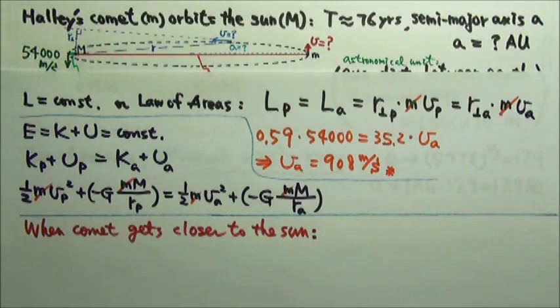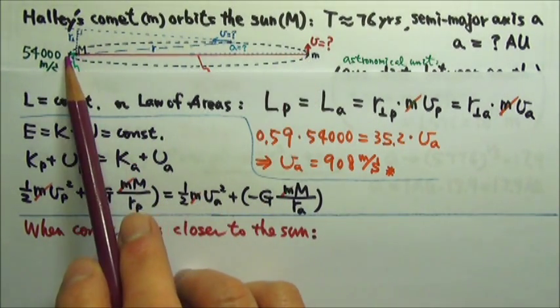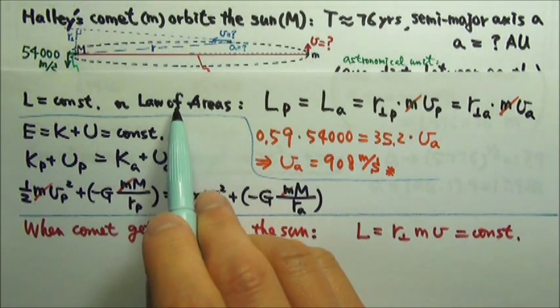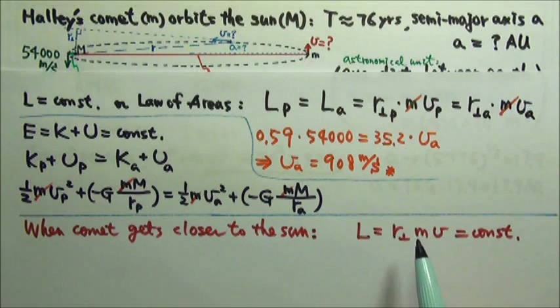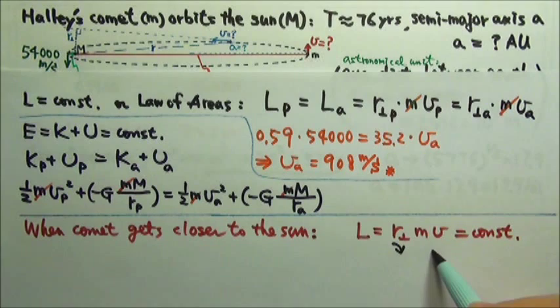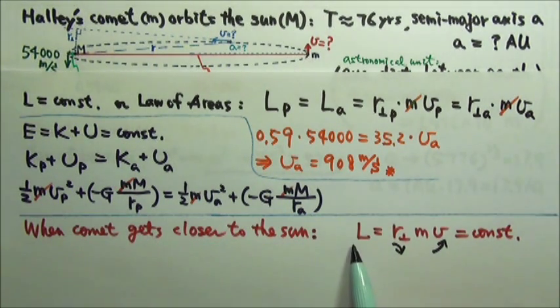For example, when the comet gets closer to the sun, the law of areas or the angular momentum conservation tells us that as the perpendicular distance decreases, the speed of the comet increases. So the angular momentum can stay a constant.